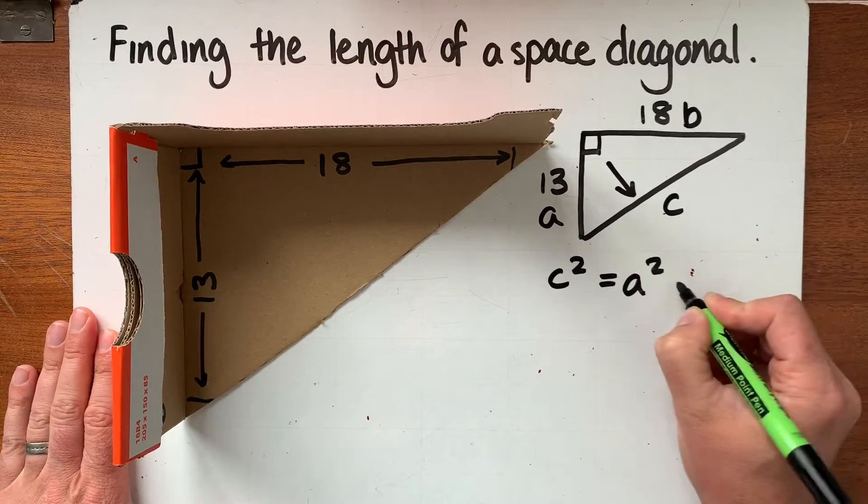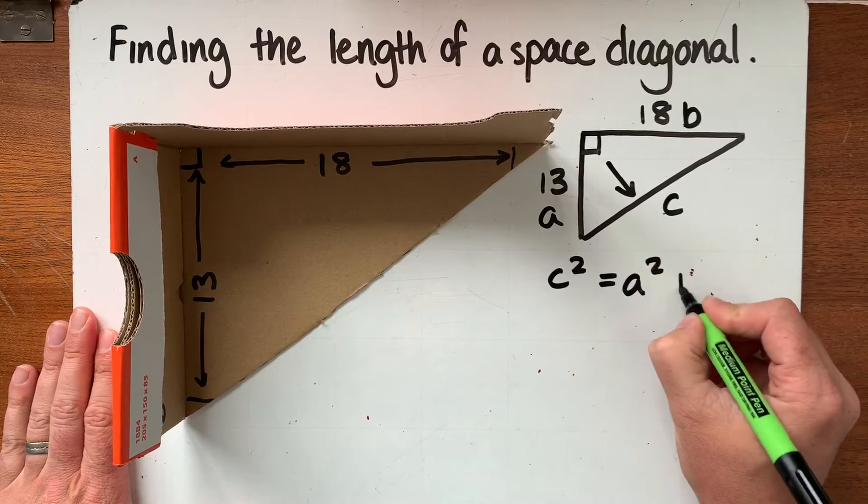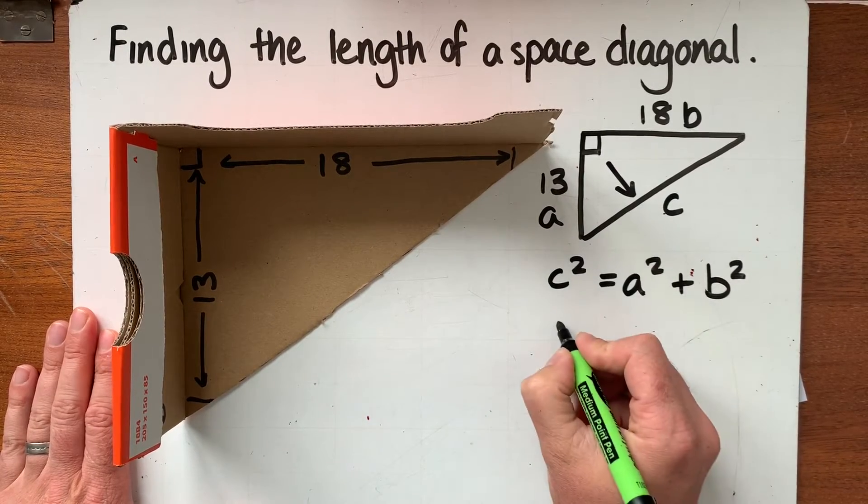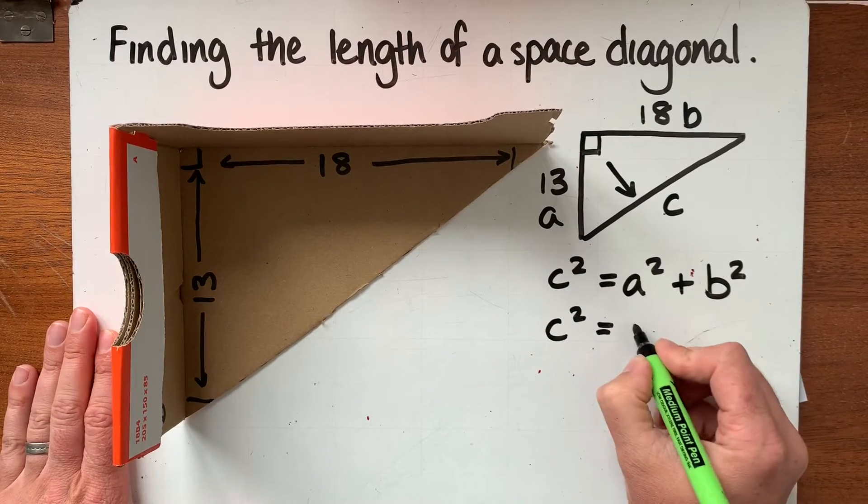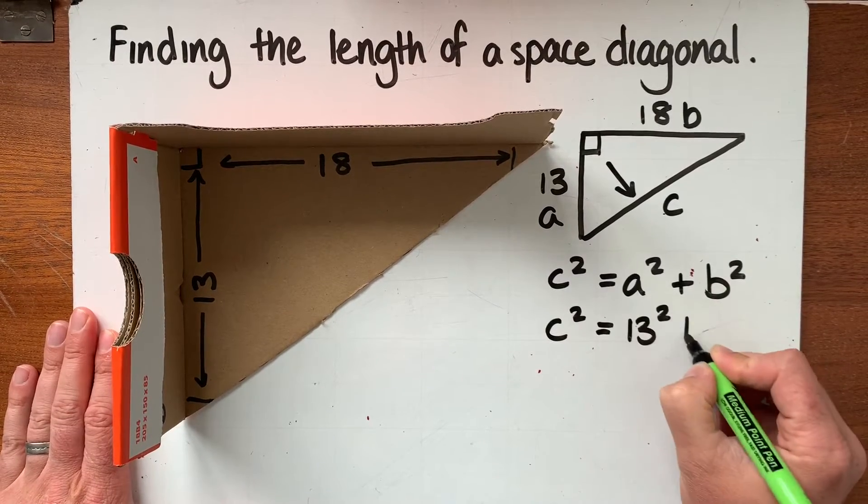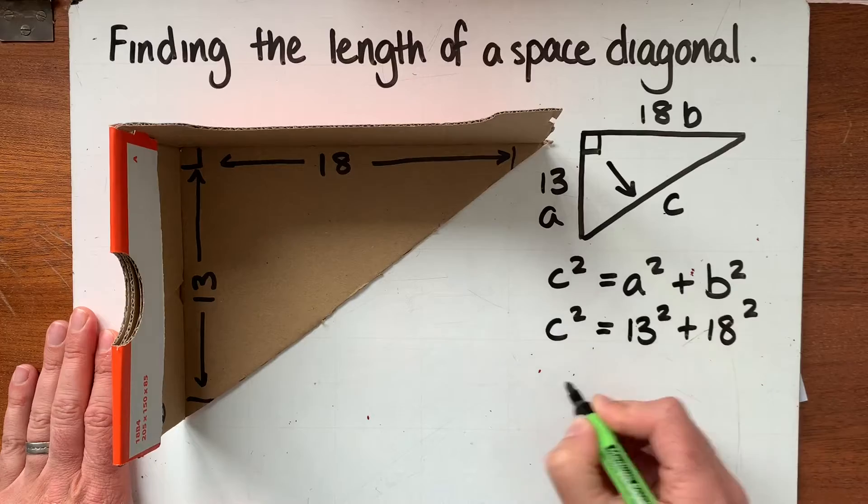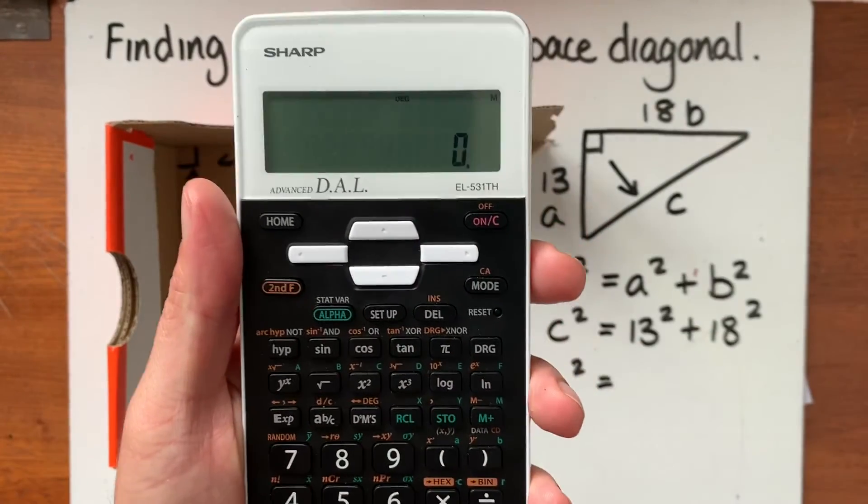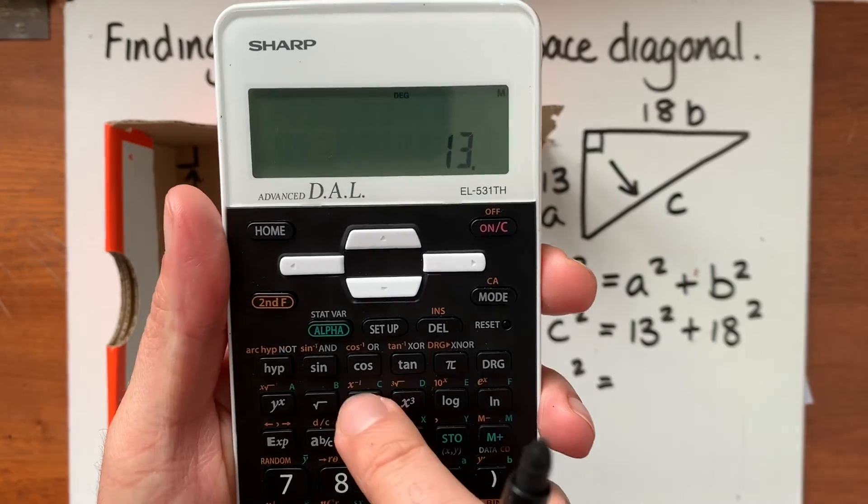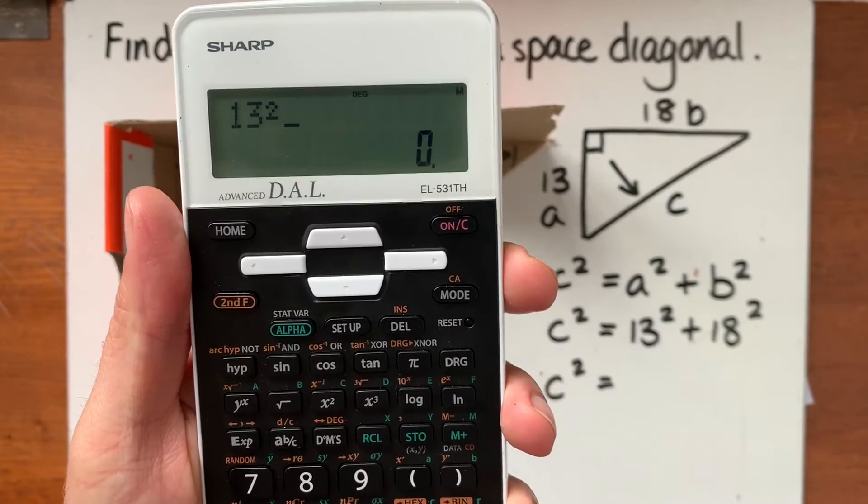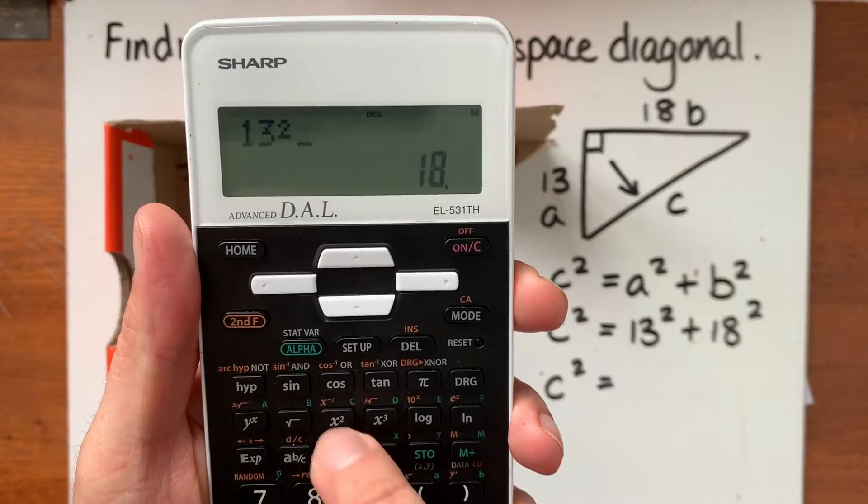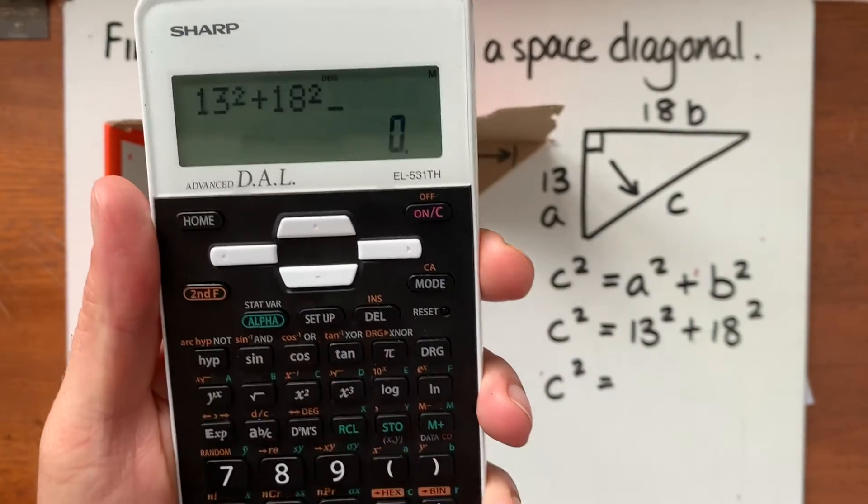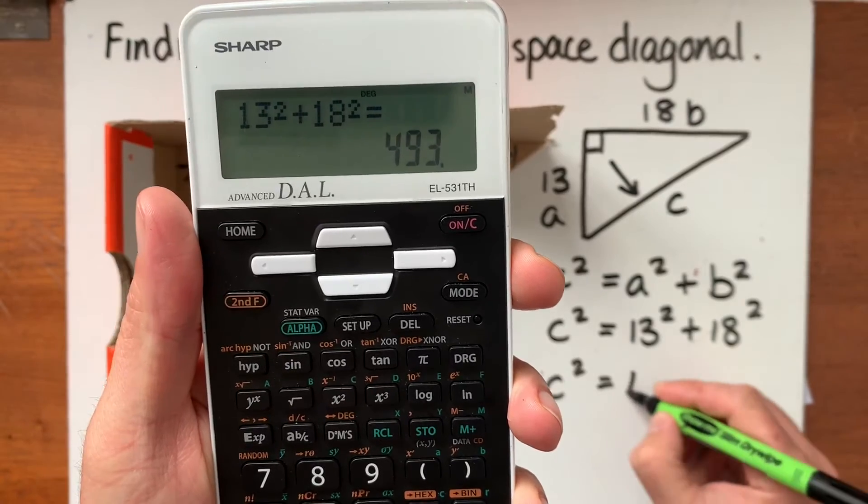We're starting with Pythagoras's theorem that the longest side the hypotenuse squared is equal to the two shorter sides squared and added. Quick bit of substitution and we've got 13 squared plus 18 squared. I'm going to do that all on my calculator at once so you can just type that in. You've got 13 using your little x squared button and then we've got 18 x squared button. 18 squared and that gets me 493.